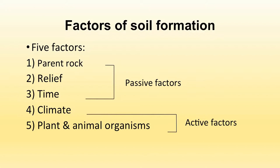There are five different factors that result in soil formation. First is the parent rock, second is the relief, third is time, fourth is climate, and fifth is plants and animals or organisms. The first three are known as passive factors and the last two are known as active factors of soil formation.